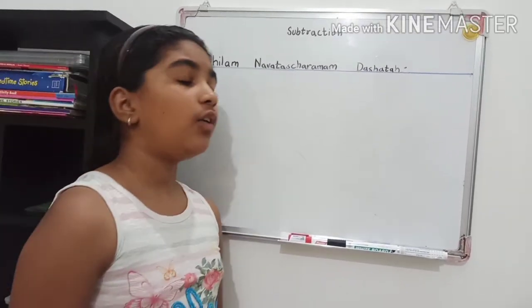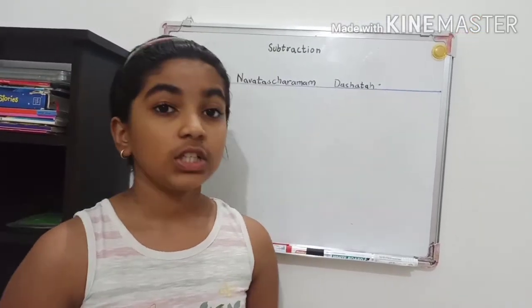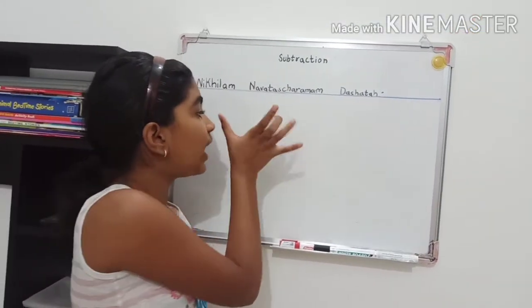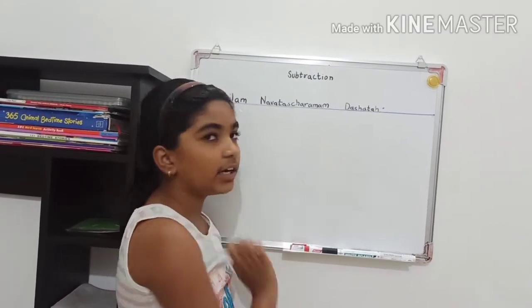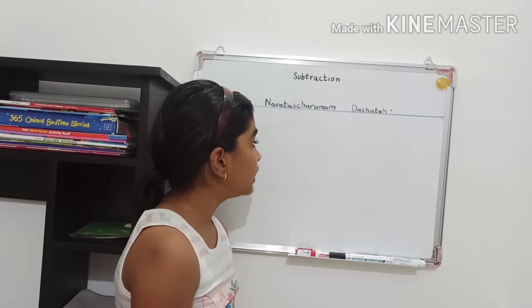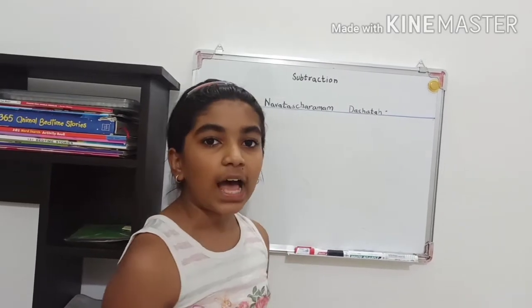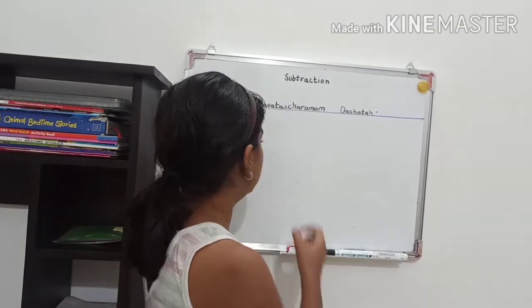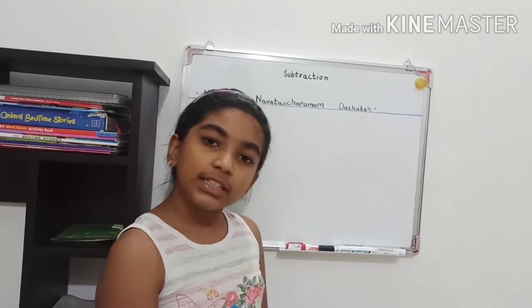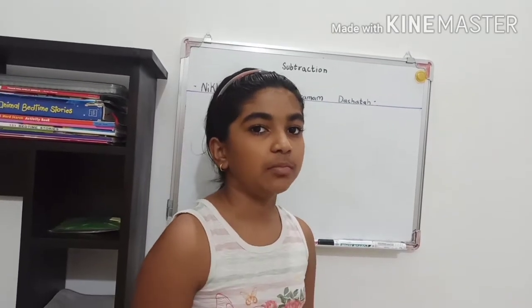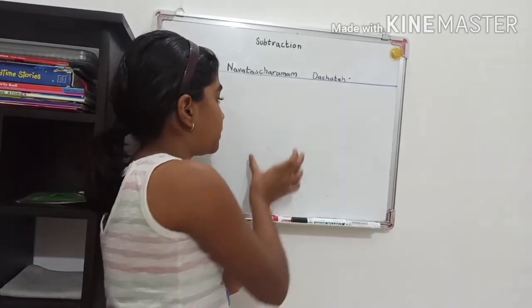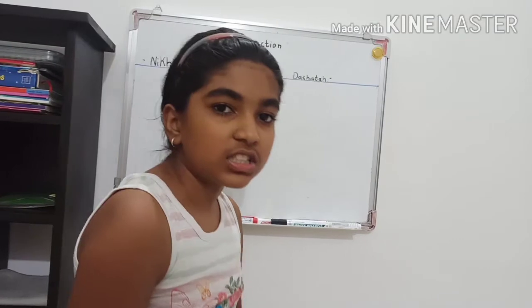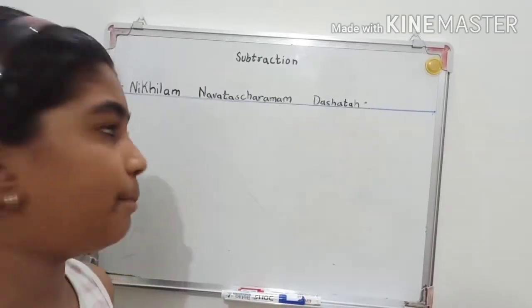Now I'm going to tell you the method. You have to write the Aadhar or base number, then write your subtraction below it. After that, identify the 'all' numbers and the 'last' number. Then you just subtract and you'll get your answer. Let's take an example.